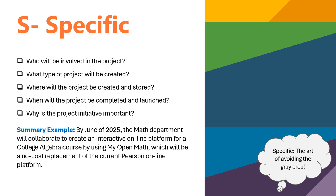Consider the platform you will use to develop your project. When will the project be completed and launched — is there a specific deadline or timeline? Why is the project initiative important? Is it going to replace a high-cost textbook, better diversify a course based on the student population, or is it a better fit for your teaching style or students' learning styles? Summary example: By June of 2025, the math department will collaborate to create an interactive online platform for a college algebra course using MyOpenMath, which will be a no-cost replacement of the current Pearson online platform.